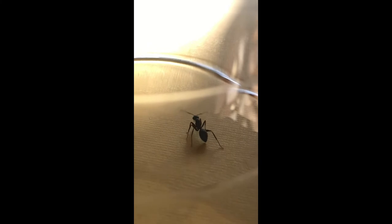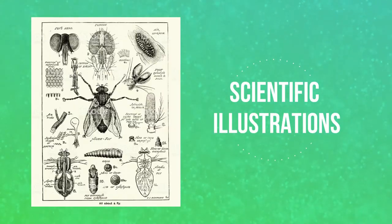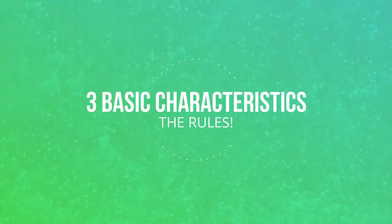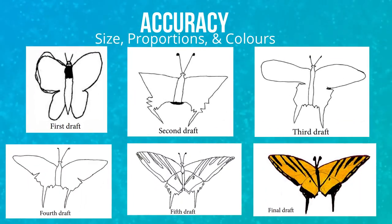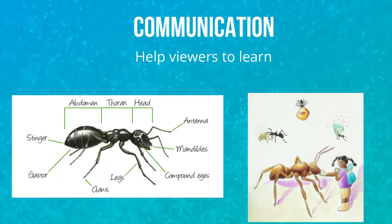I caught two different bugs — a dock spider and an ant. Since I can't keep them forever, the next step is to draw them. Scientific illustrations are the way scientists document new or known species to teach other people about them. Scientific illustrations have a lot of guidelines and rules, but since we're beginners, I'll start with three basic characteristics. First is accuracy — your drawing should be as close to the real thing as possible, including the size, proportions, and colors of the insect.